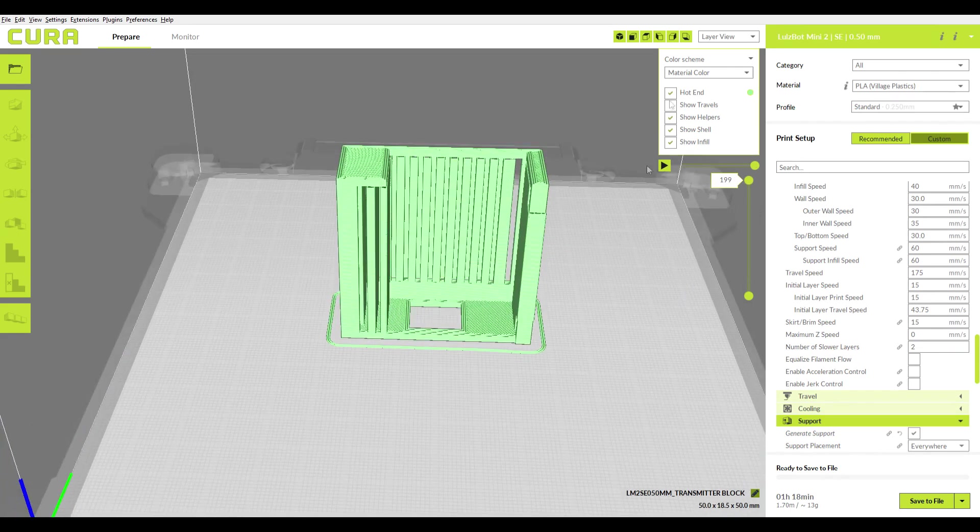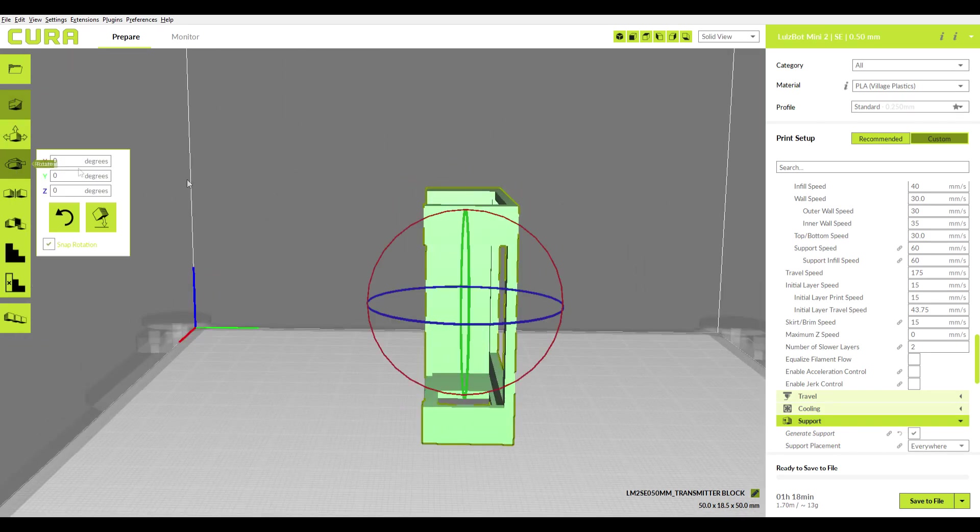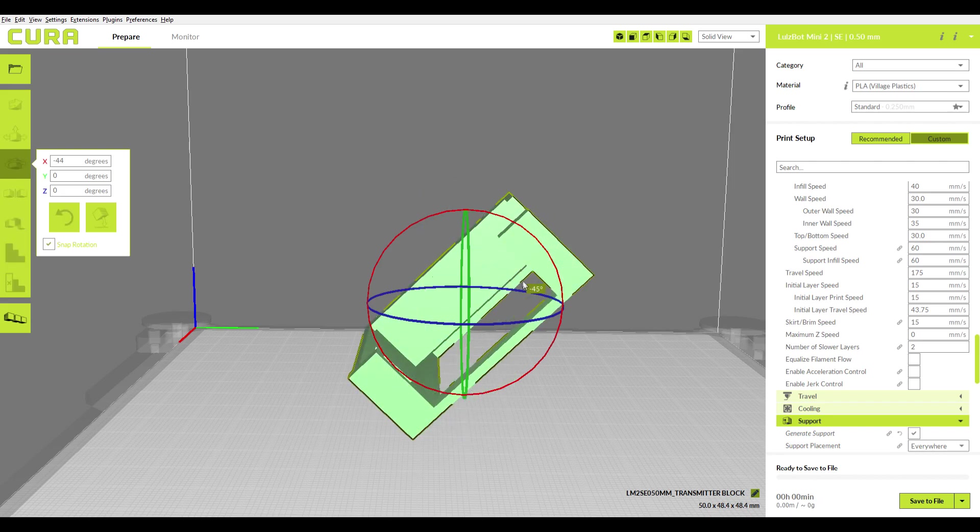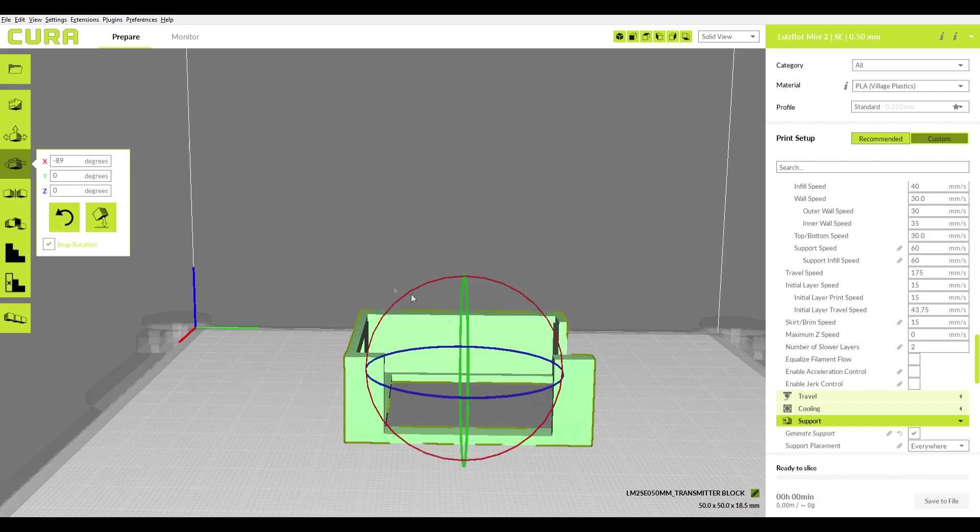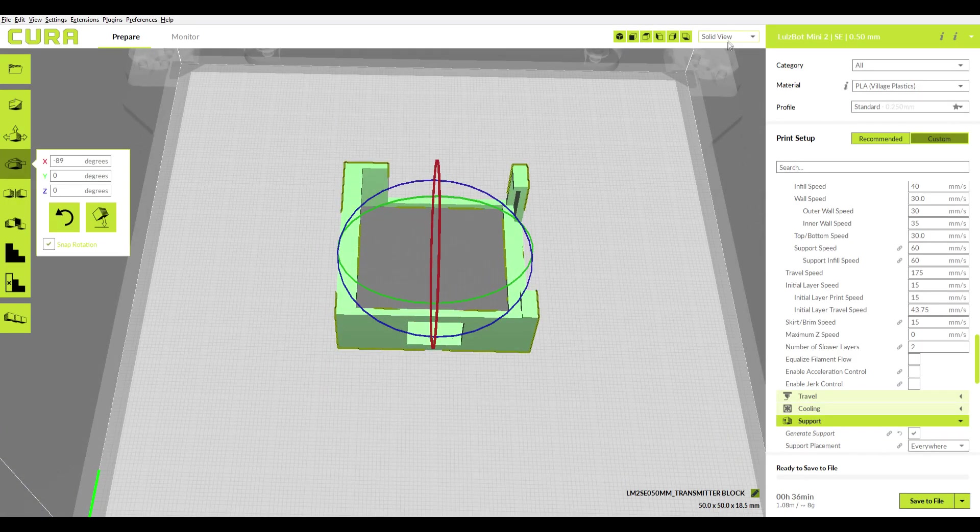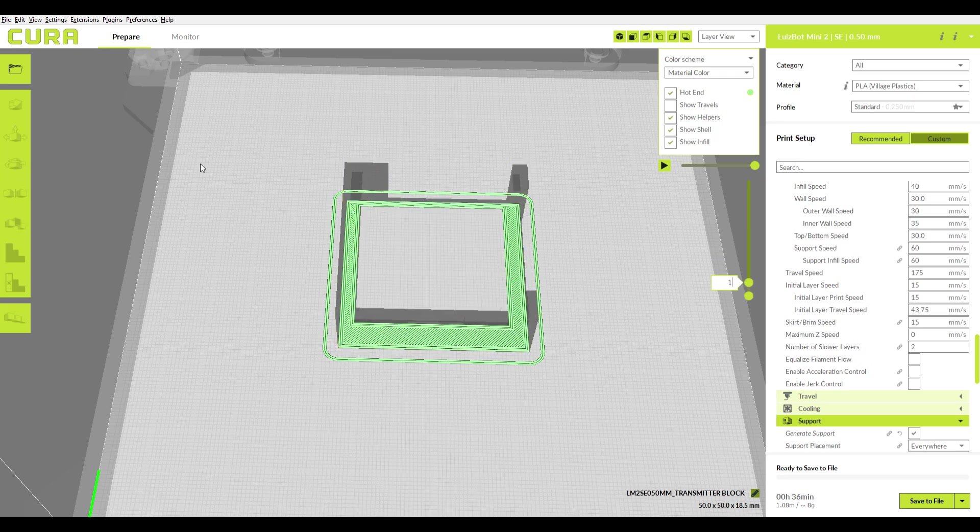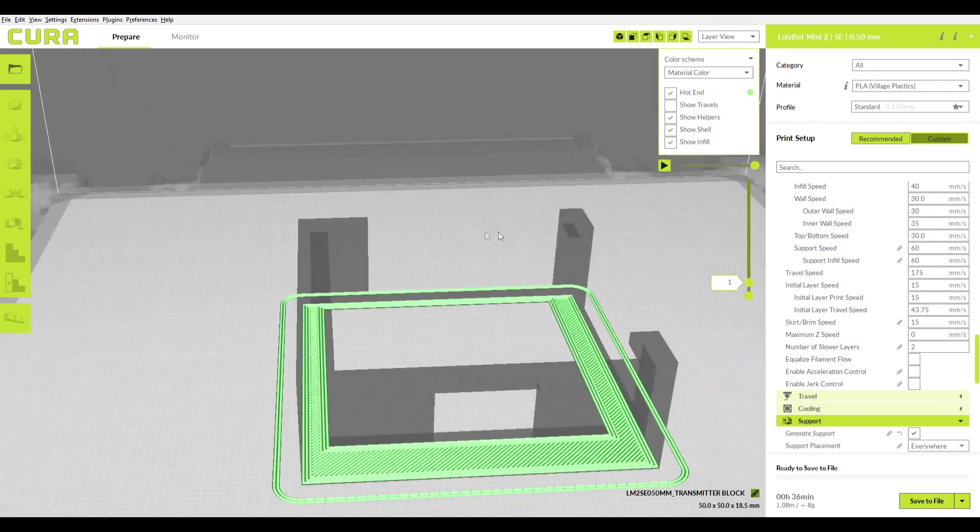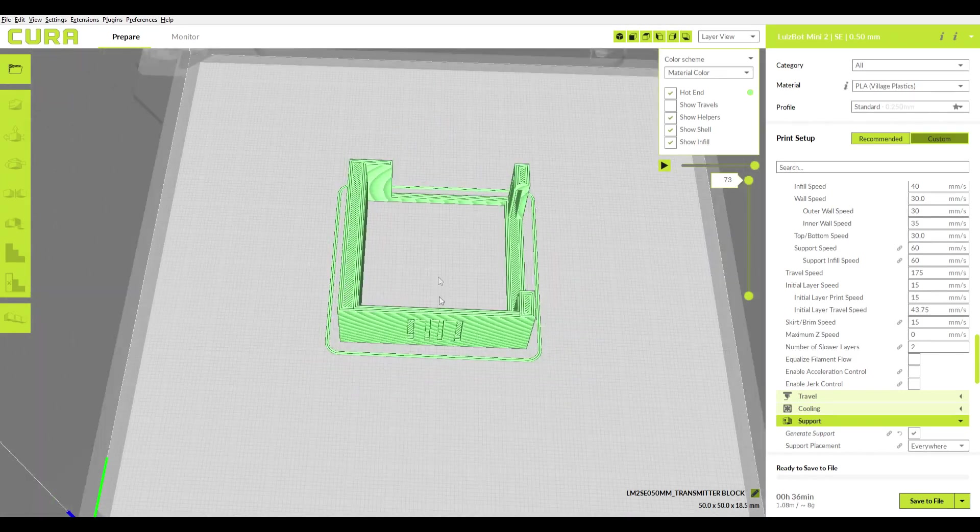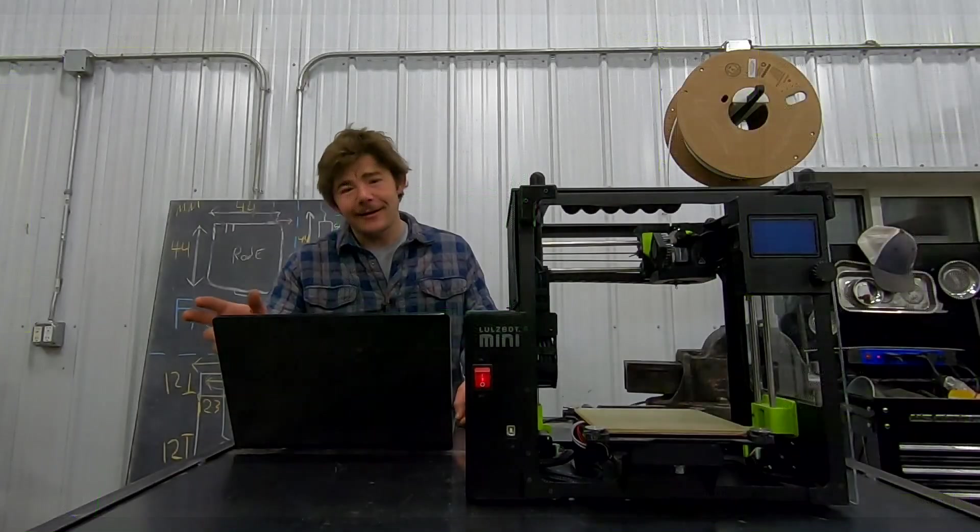The question is whether this is the efficient way to print this model, and the answer is no. If we simply take this case and flip it 90 degrees and lay the back onto the print bed, we're going to cut our layers down at over half. I mean, we're down to 73 layers before it was going to be 199. Not only that, we got rid of most of our supports, and we also cut our print time in half. We were at an hour and 18 minutes on the 199 layers. Now that we're down to 73 layers, it's only going to take 36 minutes. This is the way we're going to try to print this for the first attempt.